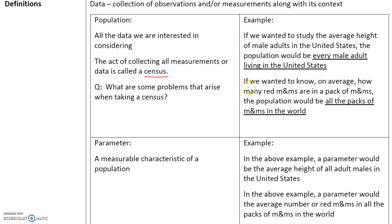Here's another example. If you wanted to know on average how many red M&Ms are in a pack of M&Ms, the population would be all the packs of M&Ms in the world. That means we would have to take every single pack of M&Ms that exists, count how many red M&Ms there are, and take the average. Think about what problems arise when taking a census.